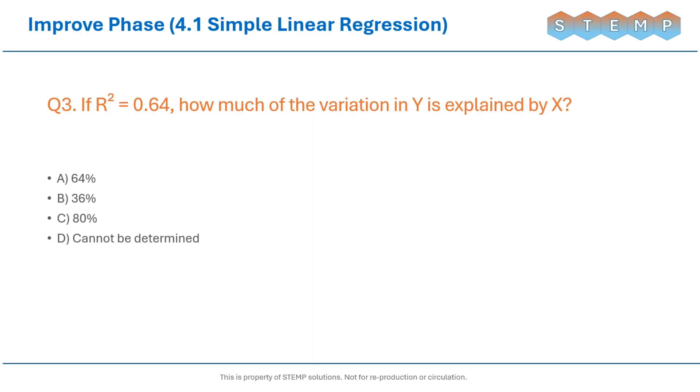If r-squared is equal to 0.64, how much of the variation in y is explained by x?